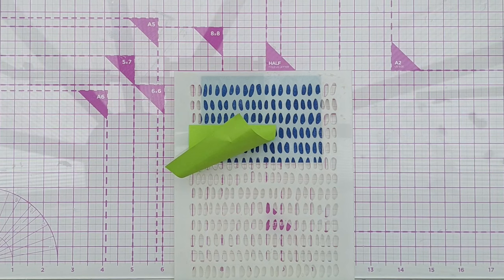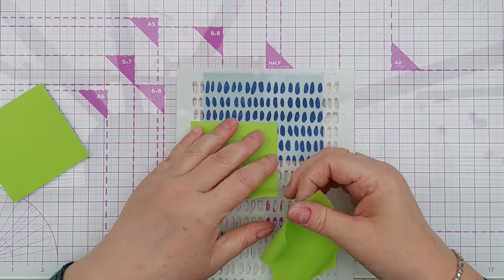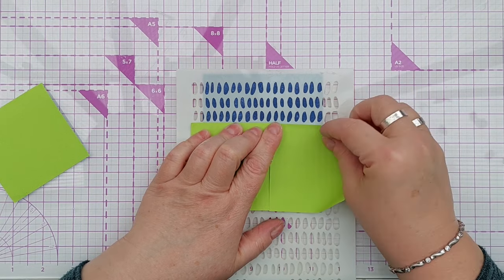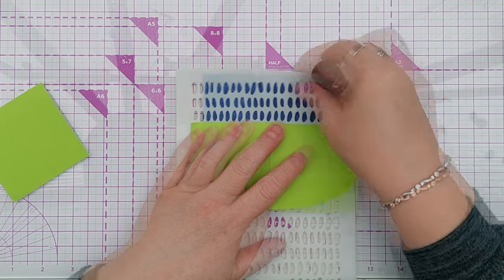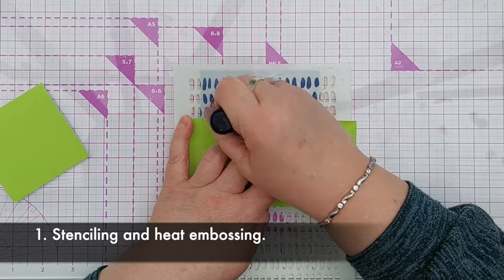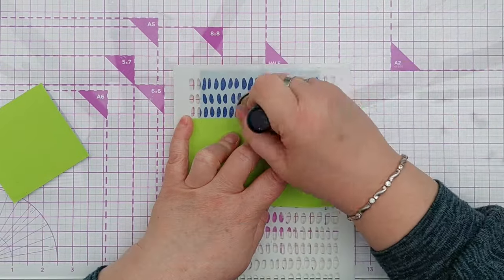Next I chopped my blue background into four pieces because I wanted to do four little experiments trying different ways to add the white marks. So the first way is to stencil on some embossing ink and then emboss with white embossing powder.